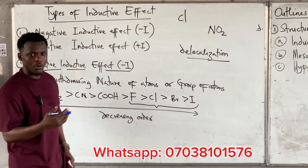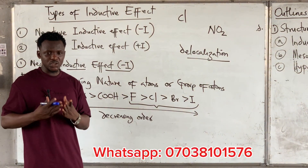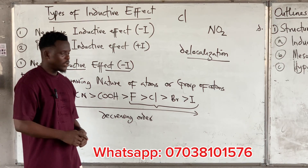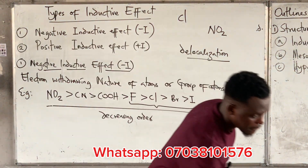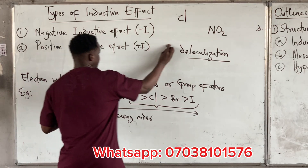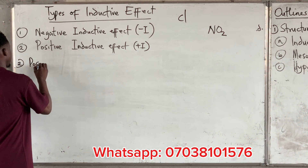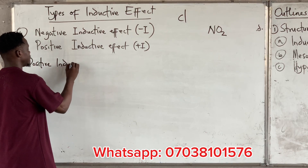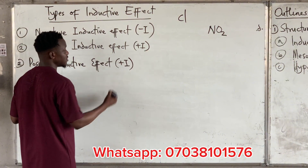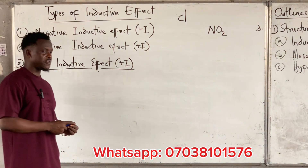Now plus I is just the opposite of minus I. Plus I substituents are basically electron-donating or electron-releasing in nature — substituents that, anytime they have been attached to a compound, release electrons into it. Let's clean this and take the positive I. Please take note: the exam will often write it as plus I or minus I, so spell it out as positive inductive effect.